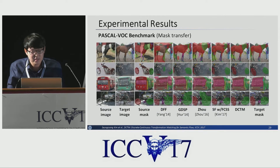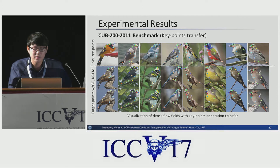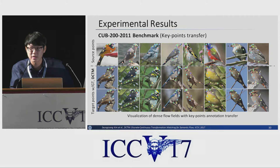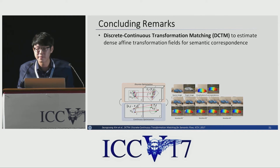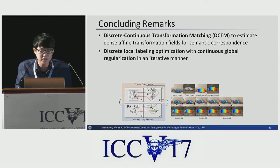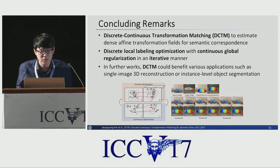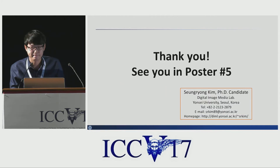In other applications such as mask transfer, our DCTM reliably transfers the source mask to the target. In keypoint transfer, our DCTM successfully transfers source keypoints to the target image. To summarize, we proposed a discrete continuous transform matching framework to estimate a dense affine transformation field for semantic correspondence, combining discrete local label optimization with continuous global regularization in an iterative manner. Future work includes benefiting applications such as single-image 3D reconstruction or instance-level object segmentation. Thank you for your attention.